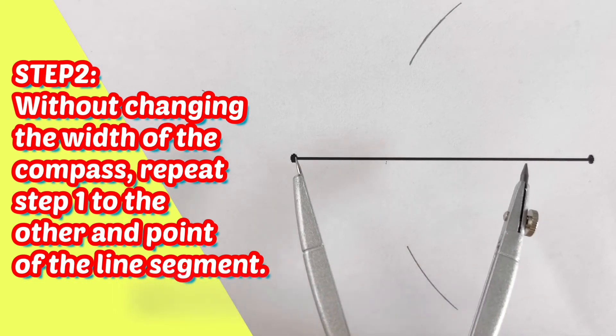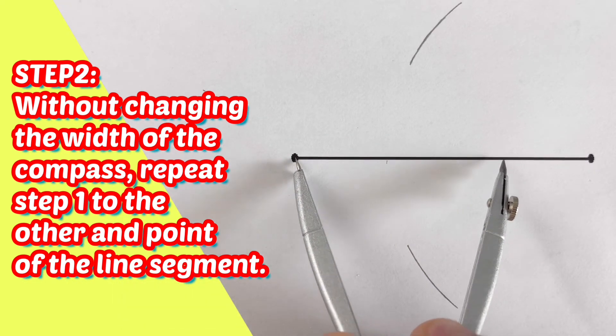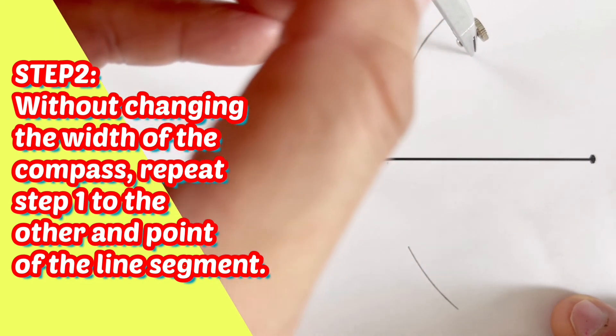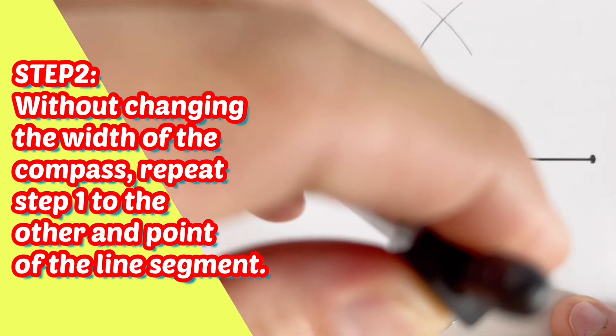So I am going to put this sharp end on the other endpoint right there. And then I am going to create an arc above the line segment and at the same time below the line segment.